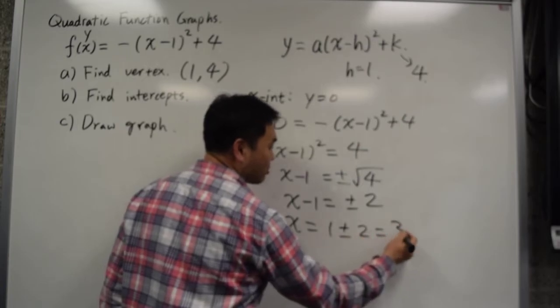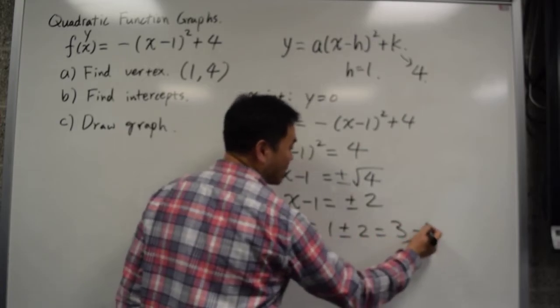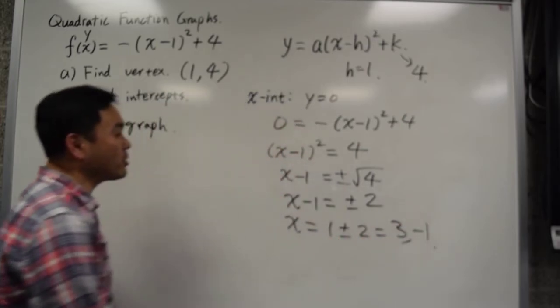So that gives you 1 plus 2, which is 3. 1 minus 2, which is negative 1. So those are the x-intercepts.